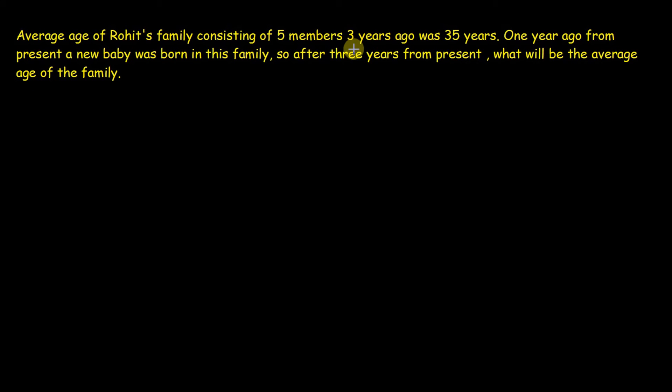We have given average age of family 3 years before from present. For solving these type of questions always first convert the average age to total age or sum of all ages. Here 3 years before 5 members average age is given as 35 years. So 3 years before total age of 5 members is equal to 35 multiplied by 5 that is equal to 175 years.